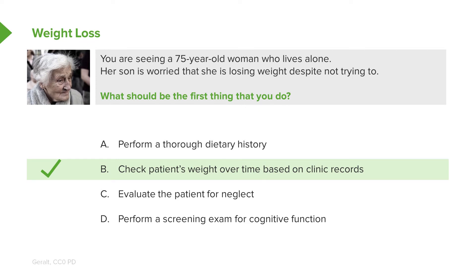Of course, A, C, and D are good options too. And once you demonstrate that, oh gee, there has been a weight loss, you're going to follow through on all of those things. And we'll talk about unintentional weight loss among older adults in a minute.